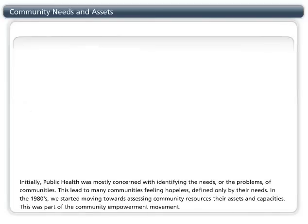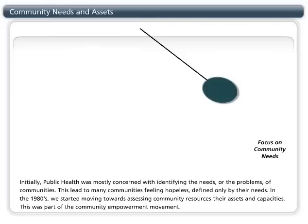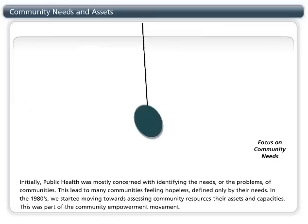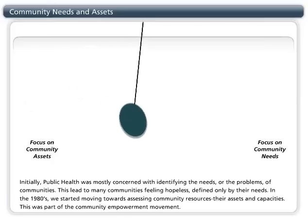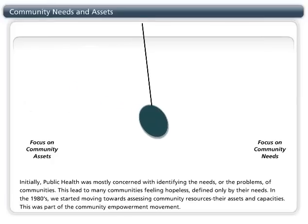Initially, public health was mostly concerned with identifying the needs or the problems of communities. This led to many communities feeling hopeless, defined only by their needs. In the 1980s, we started moving towards assessing community resources, their assets, and capacities. This was part of the community empowerment movement. Ideally, the focus should fall in the middle, giving equal attention to community needs and assets. The goal of a healthier community will be easier to reach with a full picture of what is going on in the community — good and bad.